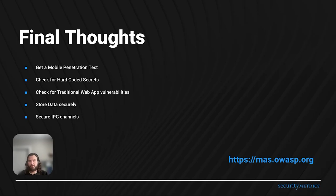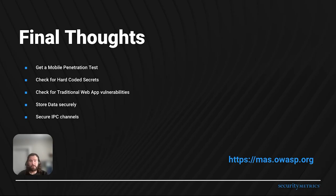Secure your data storage — only store the information you absolutely need and make sure it's encrypted and protected. Don't leave sensitive data lying around for the taking. Secure your inter-process communication channels — make sure other apps on the device can't unintentionally access your data or functionality. These steps can go a long way in hardening your mobile app against potential attacks. OWASP has a site, mas.owasp.org, with fantastic resources and checklists for improving your mobile application security. I highly recommend checking it out. Thank you for your time today. If you have any questions or would like to discuss your specific security needs, please don't hesitate to reach out.